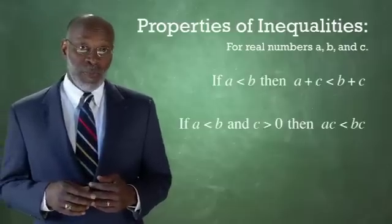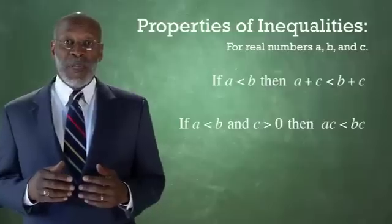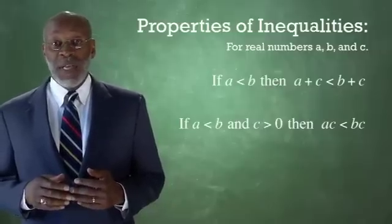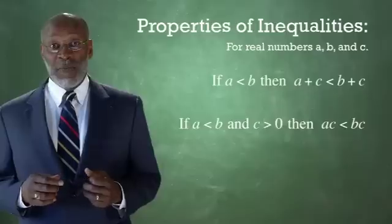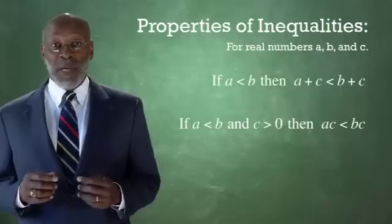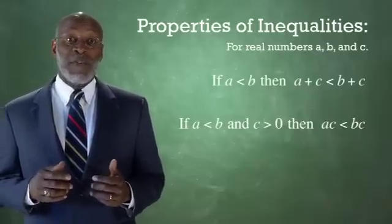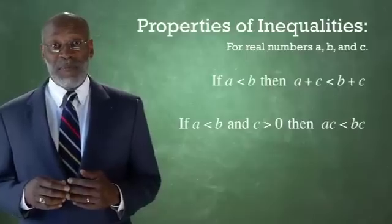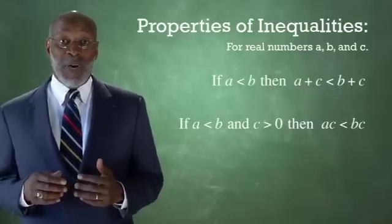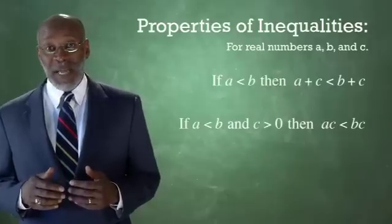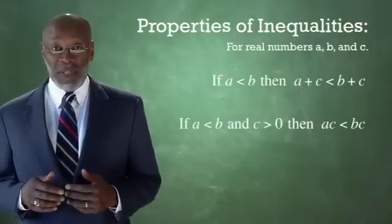Property two, again, if A, B, and C are real numbers, and C is greater than zero, that is, C is a positive number, then property two states that if A is less than B, and C is greater than zero, or C is positive, then A times C is less than B times C.